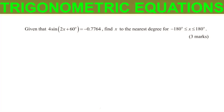Trigonometric equation: given that 4 sine of (2x + 60°) is equal to negative 0.7764, find x to the nearest degree. The range is x should be greater than or equal to negative 180 and less than or equal to 180.